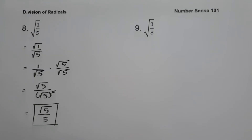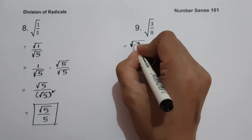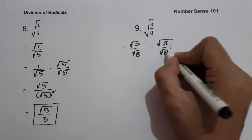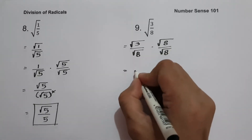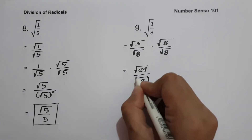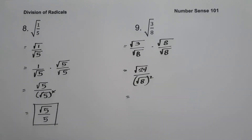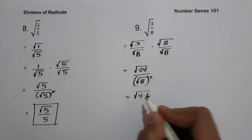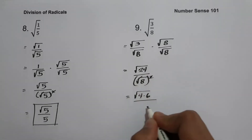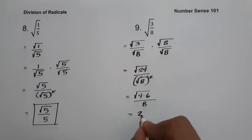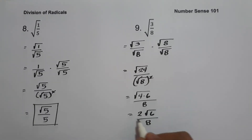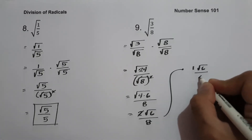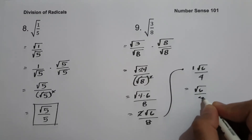On example number nine, we have square root of 3 over 8. We rewrite as square root of 3 over square root of 8, then rationalize by multiplying numerator and denominator by square root of 8. This gives square root of 3 times square root of 8, which is square root of 24, over square root of 8 raised to 2, which is 8. The factors of 24 include 4 times 6, where 4 is a perfect square. So we get 2 square root of 6 over 8. Since the GCF of 2 and 8 is 2, this simplifies to square root of 6 over 4.